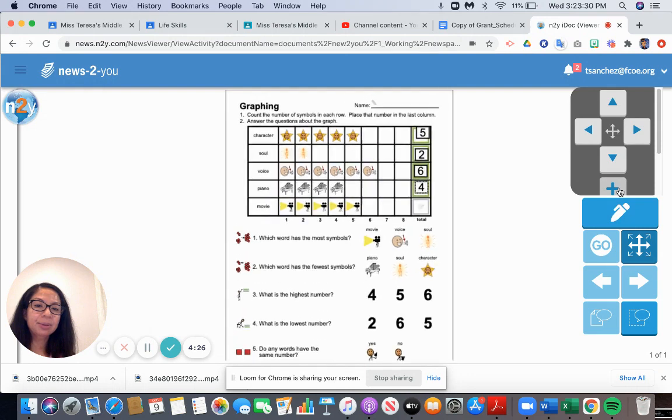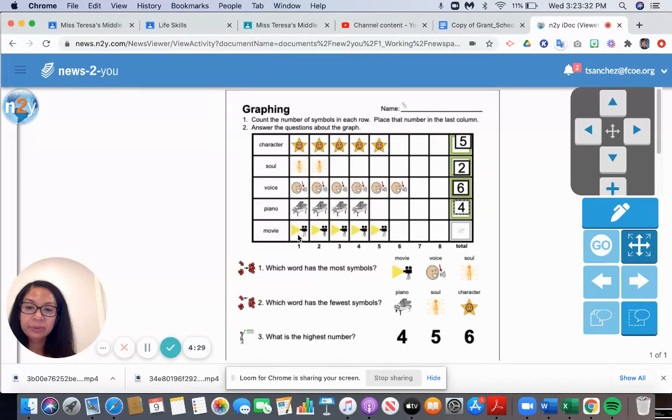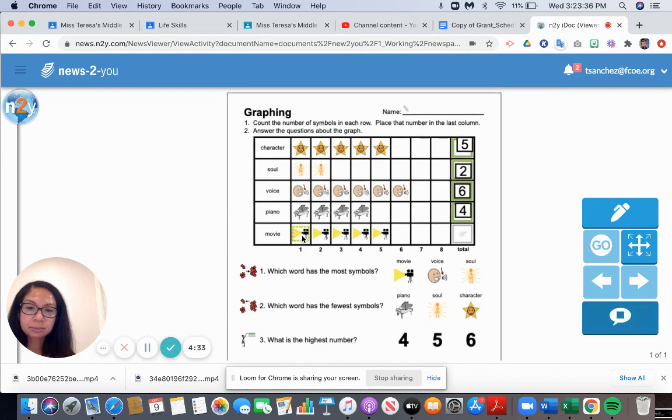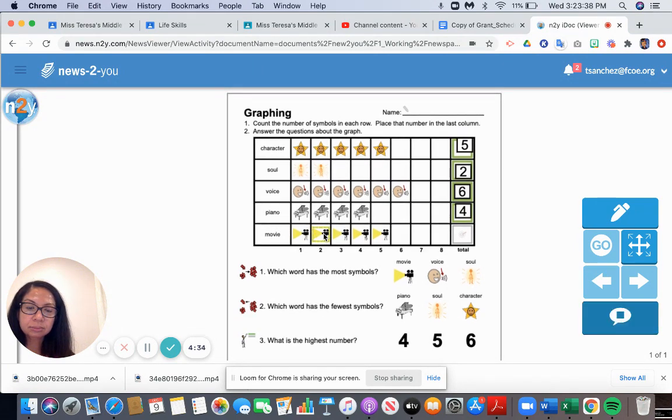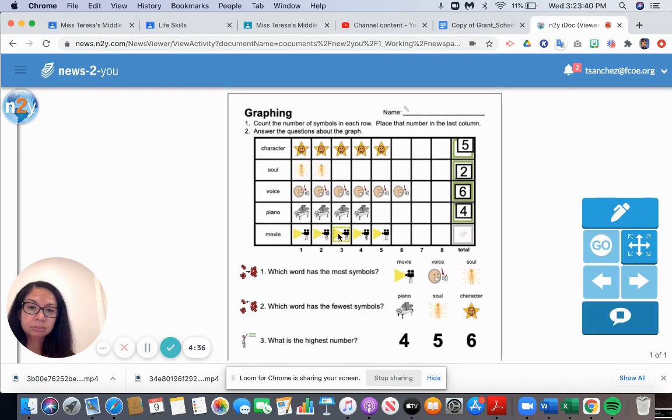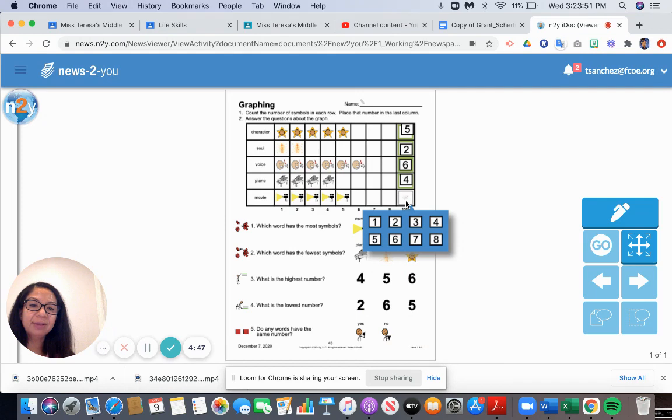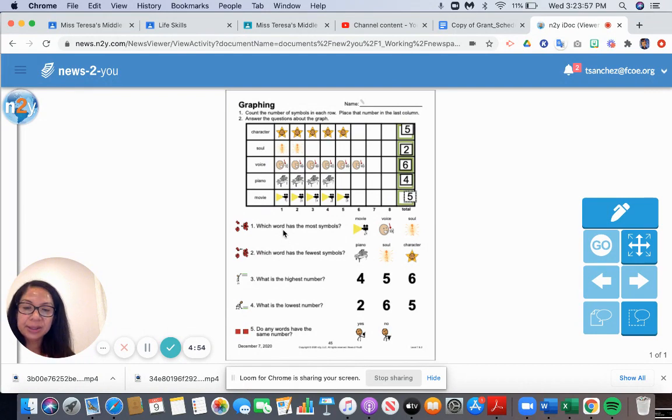And let's count the last symbols, which is movie. How many movies are there? One, two, three, four, five. There are five movies. So let's move the number five into the box. Now let's read the questions.